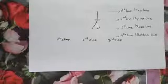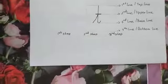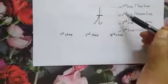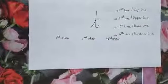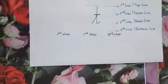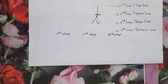For writing small cursive T, we will be using the first, second and the third line. Now, let us learn to write small cursive T step by step.